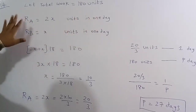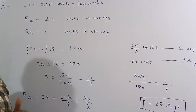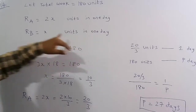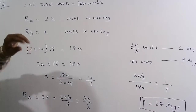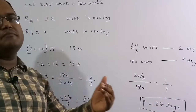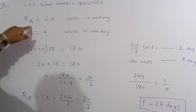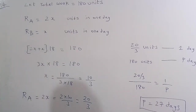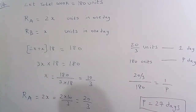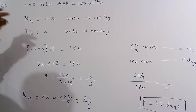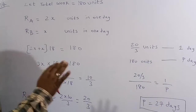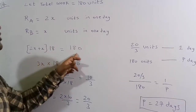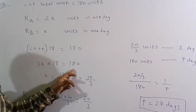Let B's rate = x units per day. Since A is twice as efficient, A's rate = 2x units per day. Together in one day they complete 2x + x = 3x units. Since they complete 180 units in 18 days: 3x × 18 = 180, so x = 180 / (3×18) = 10/3.